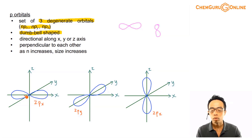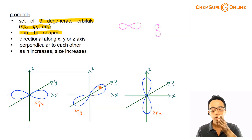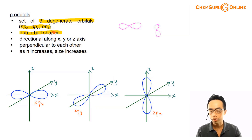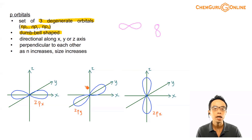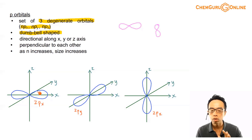My 2PX will be lying along the X axis, left and right. My 2PY will be lying along the Y axis, in and out. My 2PZ will be lying along the Z axis, up and down. When we draw P orbitals, because your P subshell comes as a bundle — my PX, PY, and PZ will always come together. So when we draw P orbitals, usually we will draw all of them together. It's very unlikely we are required to only draw one P orbital, like only 2PX without drawing Y and Z.